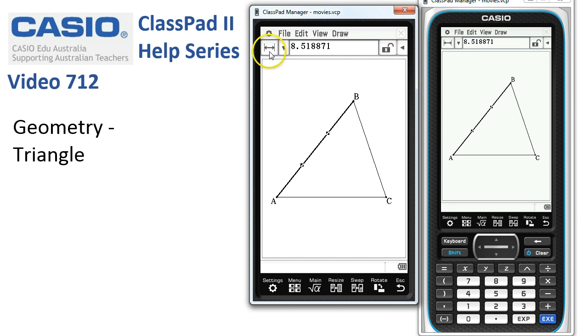So here it is, it's 8.51871. To find the length of a different side I tap off, so I've deselected this side, and I'm going to tap onto this side.